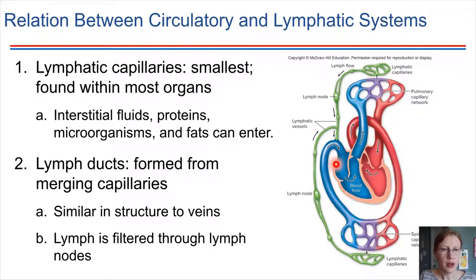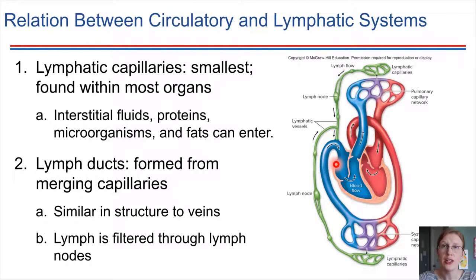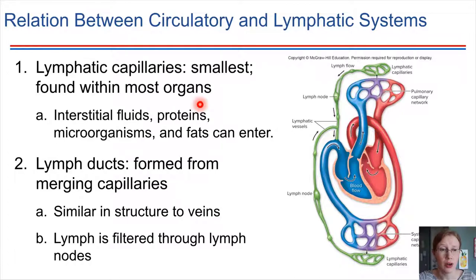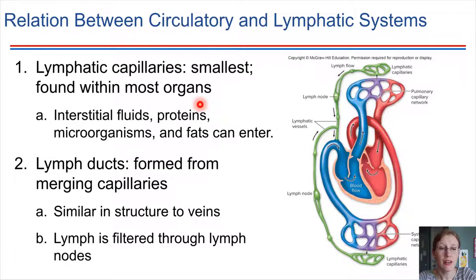There is a bridge between the lymphatic system and the cardiovascular system, and these two networks of vessels do have some connections with each other. Lymphatic capillaries branch out and spread into most organs, then merge together to form ducts. The structure is similar to veins, but instead of carrying blood, these vessels carry lymph. This will be covered in greater detail when discussing the immune system.